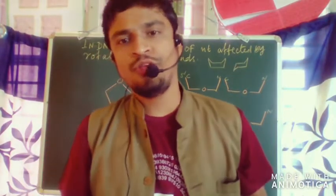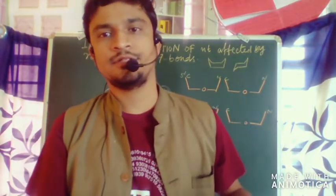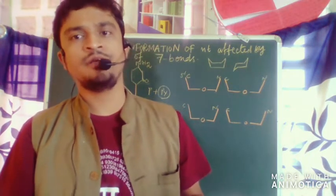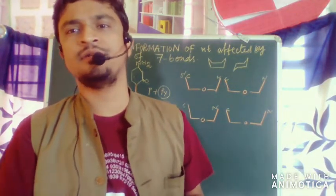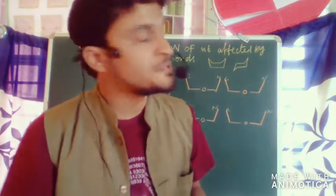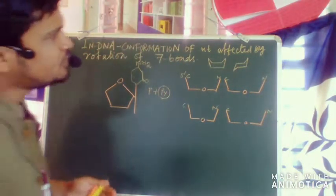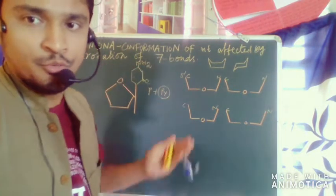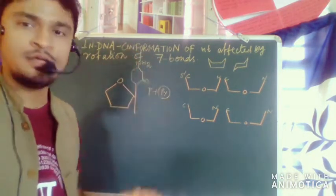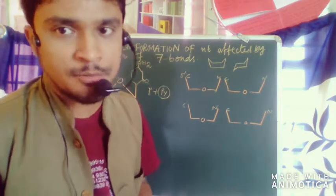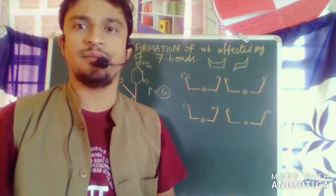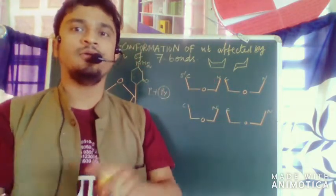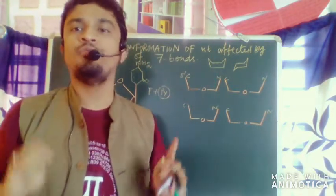Hello friends, we all know about DNA, that is the deoxyribonucleic acid, a polymer of nucleotides. Today we shall be discussing a deeper concept: the conformation of nucleotides in DNA is affected by the rotation of seven bonds. We shall understand this statement with the concept of sugar puckering, which is something very close to the concept of chemistry.